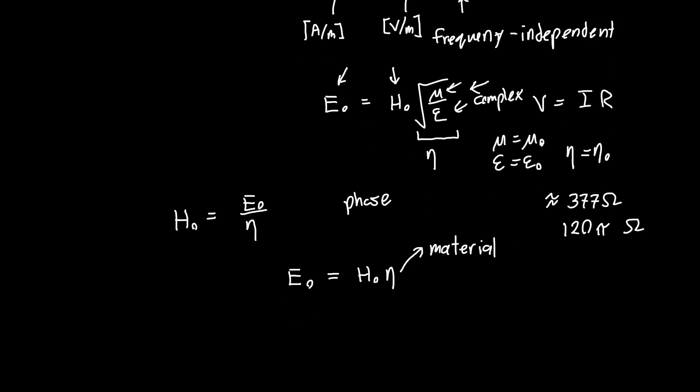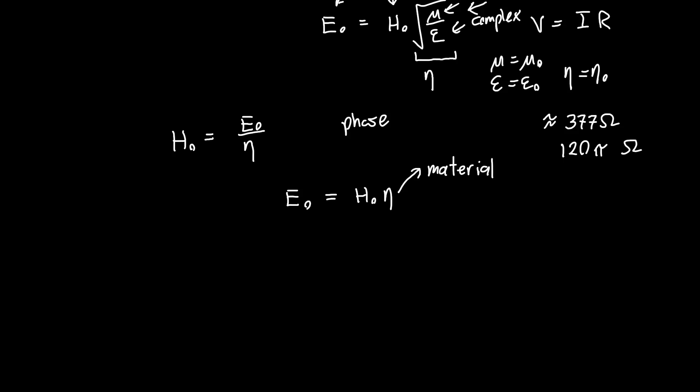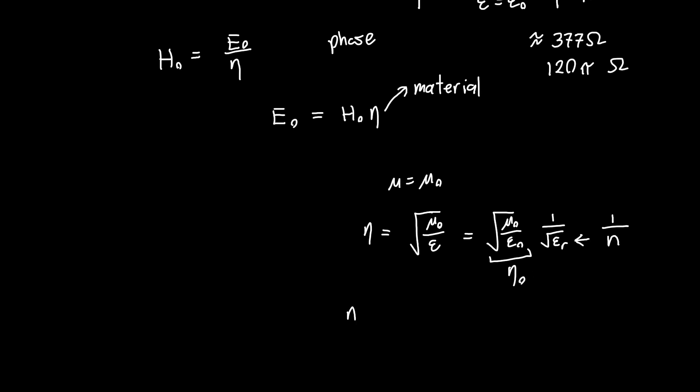So it's only a function of the permittivity and the permeability of the material that you're dealing with. Now one interesting case is when we have non-magnetic materials, so μ is equal to μ₀. In that case, η is just equal to μ₀/√ε, or if we rearrange this a little bit, μ₀/ε₀ times 1/√εᵣ. So this is just the wave impedance of free space η₀. This on the bottom, the square root of the permittivity, is the refractive index of the material. So we've got one over the refractive index times η₀. So η for any given material is just the wave impedance of free space divided by the refractive index of that material. And so this is for non-magnetic materials.